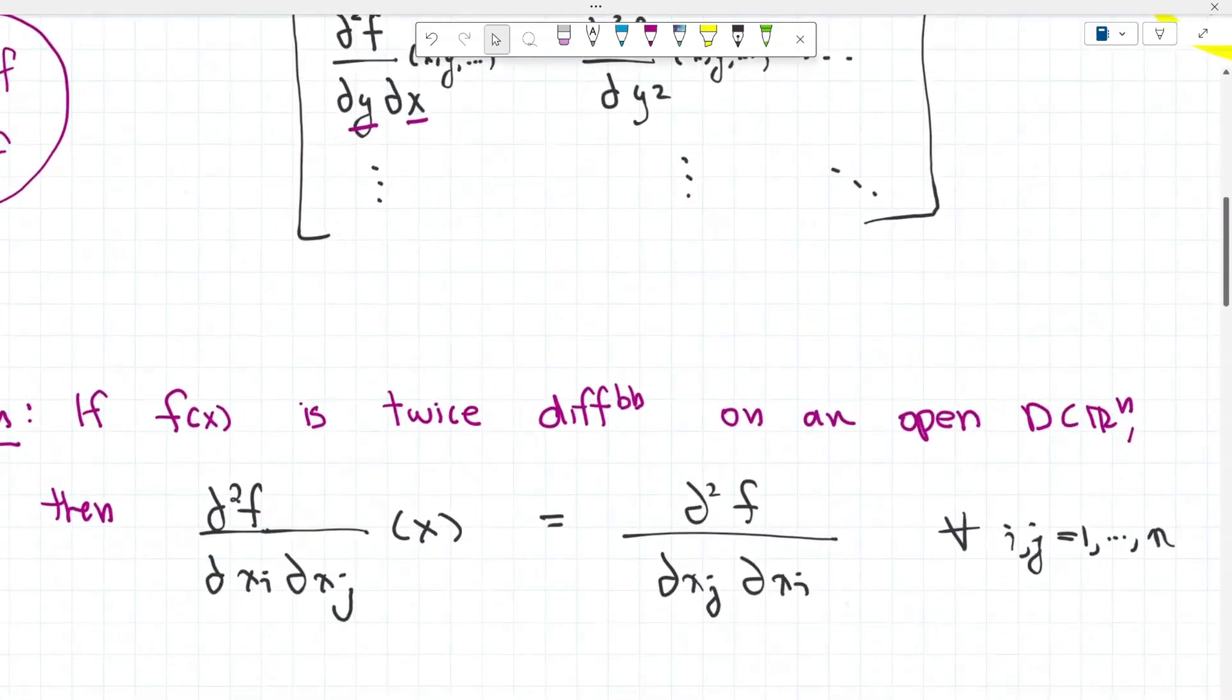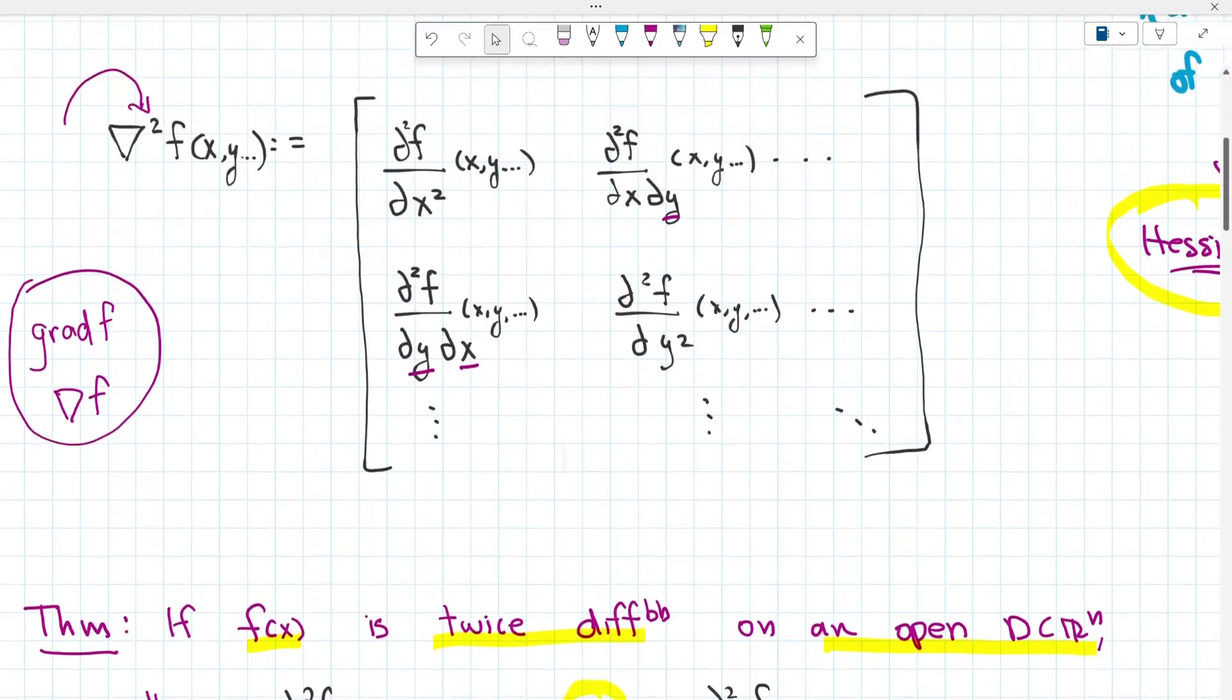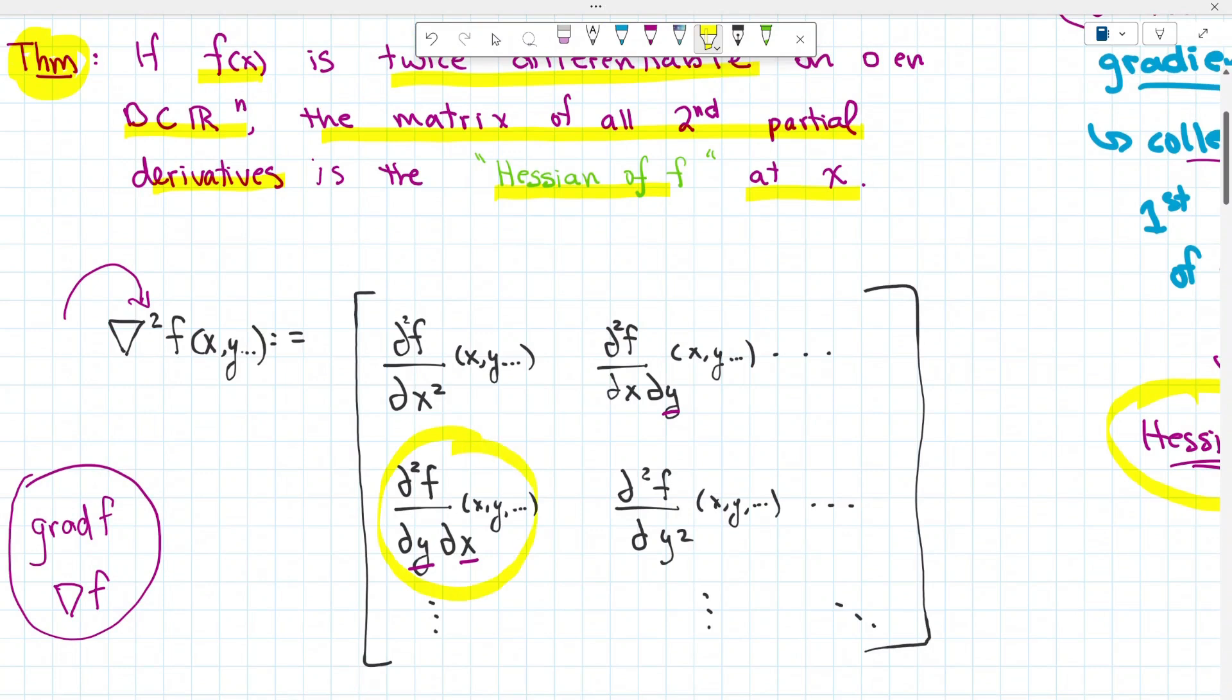I want to draw your attention to this other important theorem. If f is twice differentiable on some open region D, which is a subset of R^n, then the second derivative of f with respect to xi xj equals the second derivative of f with respect to xj and xi for all i,j from 1 to n. That means there's a bit of symmetry here. It doesn't matter if you take the derivative with respect to x1 first then x2, or if you take the derivative with respect to x2 then x1. They will be equal so long as both functions are twice differentiable. This helps speed up our calculation for the Hessian because this value here equals this value over here, and we have that symmetry, which is really nice.